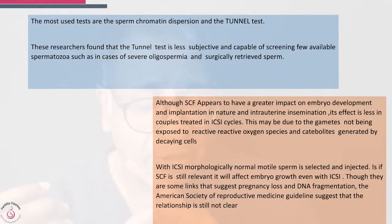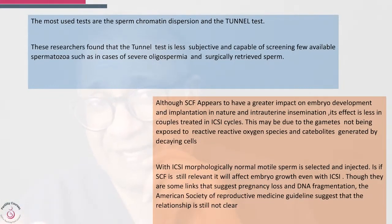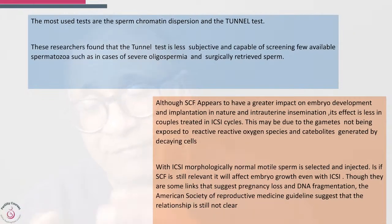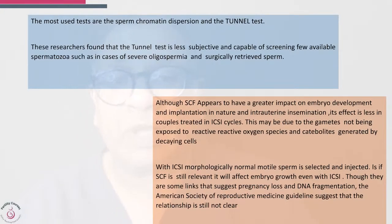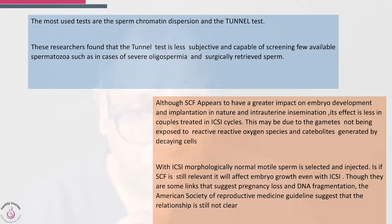With ICSI, sperm that is motile, has good morphology, and is selected is used. Even so, fragmented sperm DNA may affect growth with ICSI. Some people believe it is one of the main causes where sperm does not allow the embryo to proceed from day three to blastocyst stage. The American Society suggested that the relationship with pregnancy loss is still not very clear, and research does not conclusively link it to recurrent miscarriage.